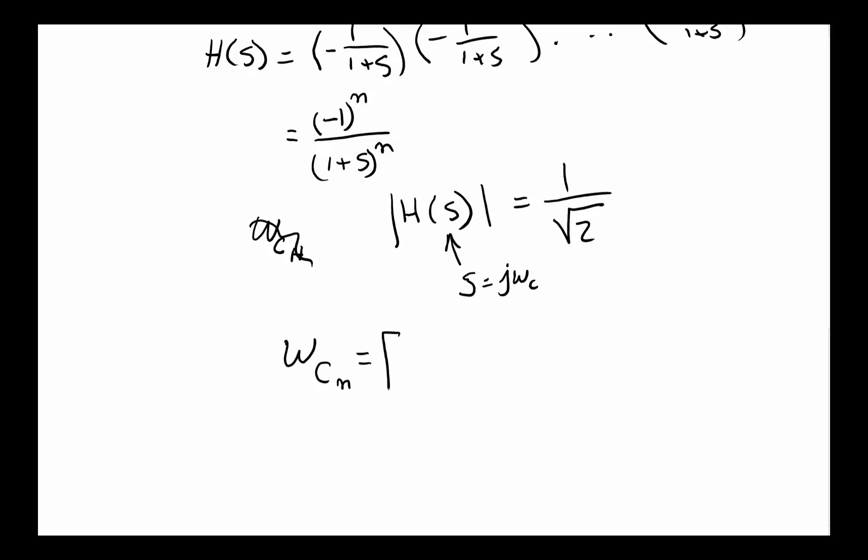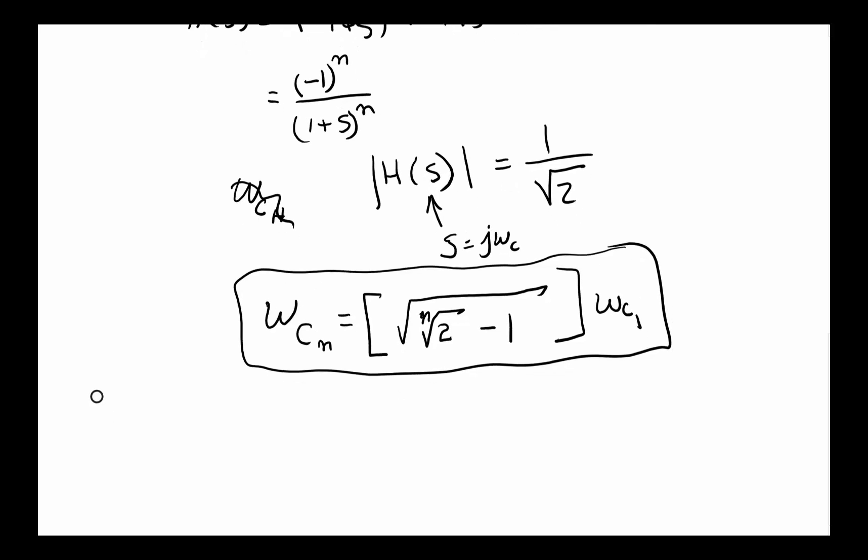it's going to be this equation: square root of Nth root of 2 minus 1, that whole thing, multiplied by omega_C of the first-order filter. So this is an equation that tells us where the cutoff frequency is and how we can arrive at it.